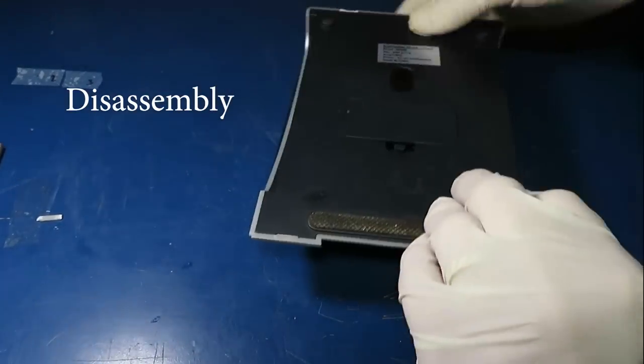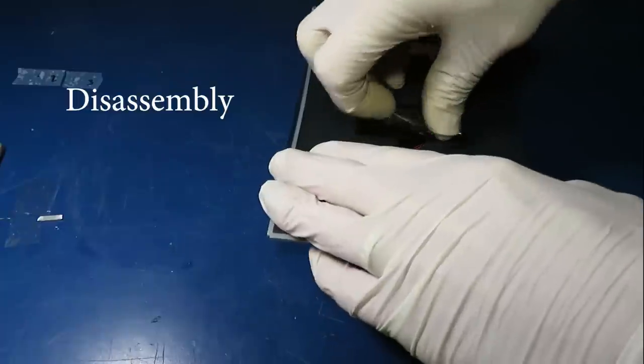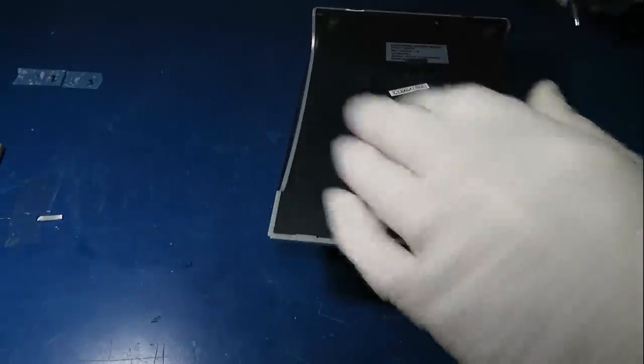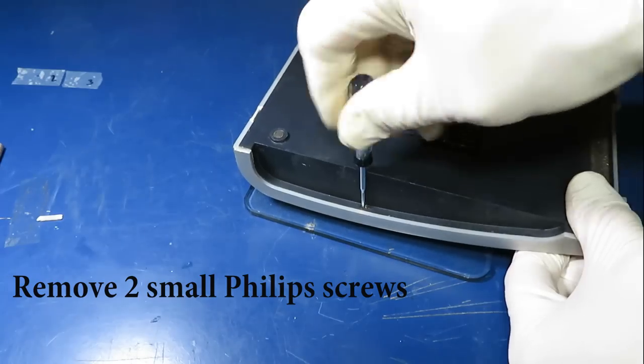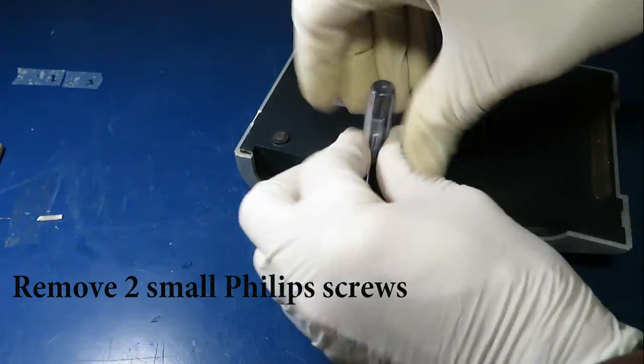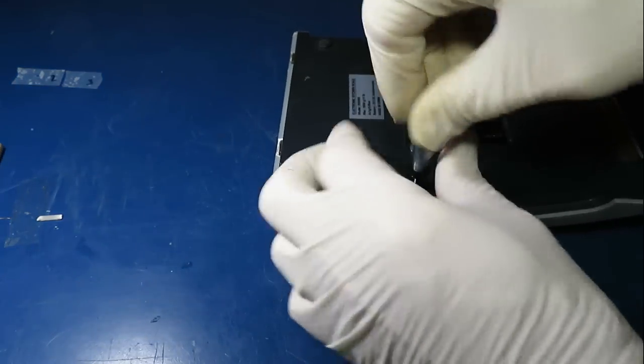First thing we're going to do is take the batteries out, and on this one there are a couple of small screws. It's going to vary from scale to scale, but I'll just go through the procedure on this one.